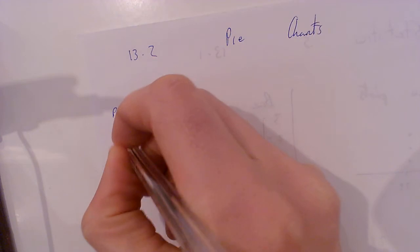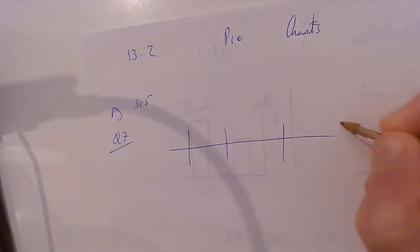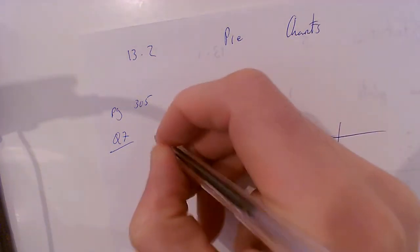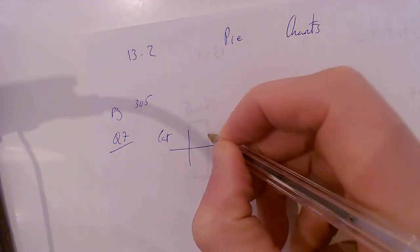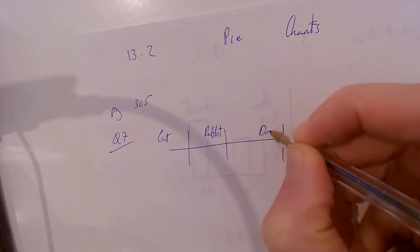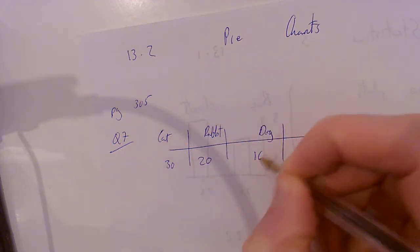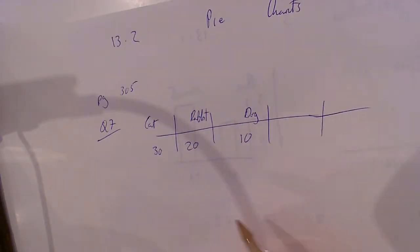If we go to page 305, question 7, we're given the table with cat, rabbit... I'll just do two or three of them. Dog 30, 20, and let's say 10. We're given different numbers here.